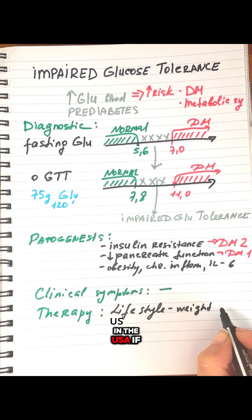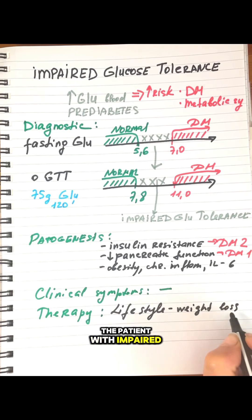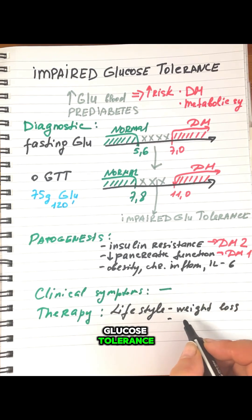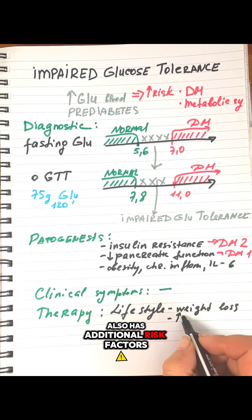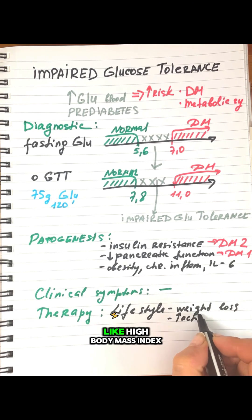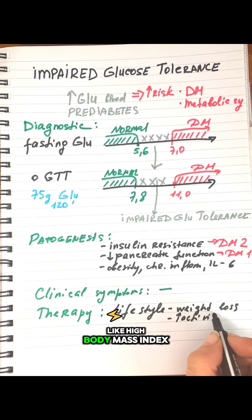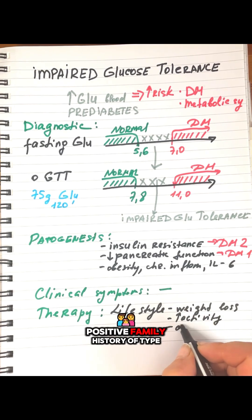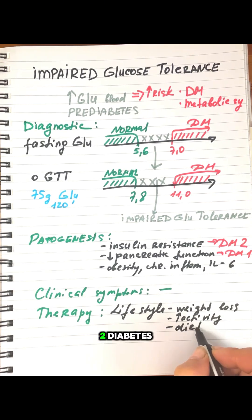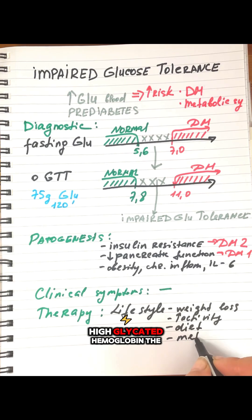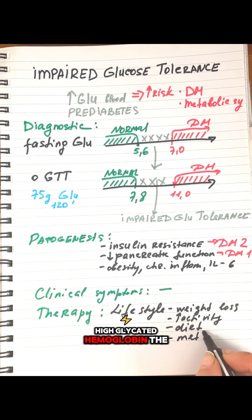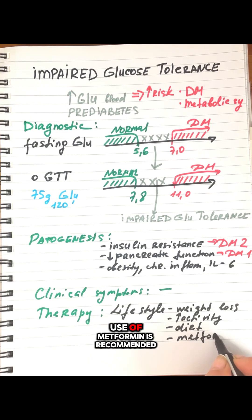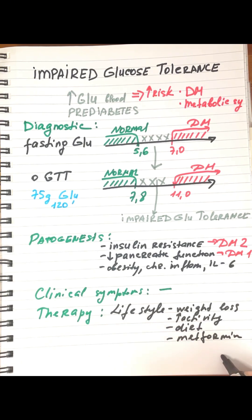In the USA, if a patient with impaired glucose tolerance also has additional risk factors such as high body mass index, positive family history of type 2 diabetes, or high glycated hemoglobin, the use of metformin is recommended.